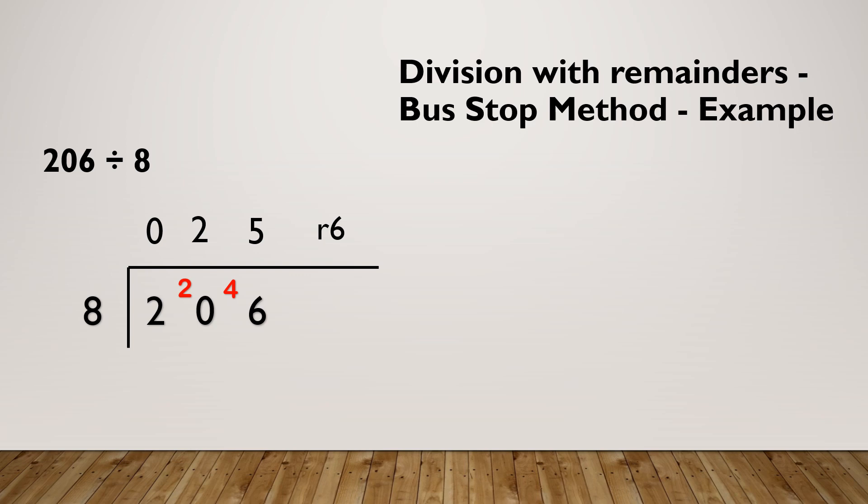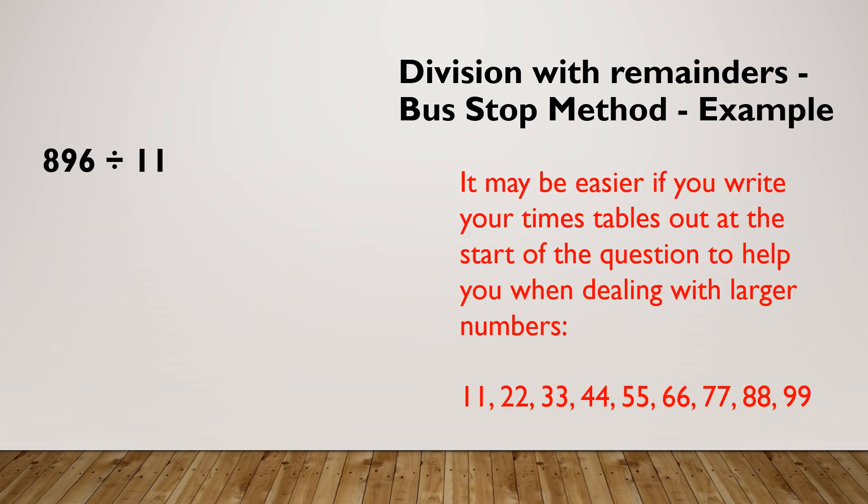Let's do one more together. If I had 896 divided by 11, if you're dividing by a number you're unsure of, it might be easy to write your times table out first so that you've got that to deal with. How many 11's are in 8? There isn't any, carry my 8. How many 11's are in 89? There's 8, remainder 1. How many 11's are in 16? There's 1, remainder 5.